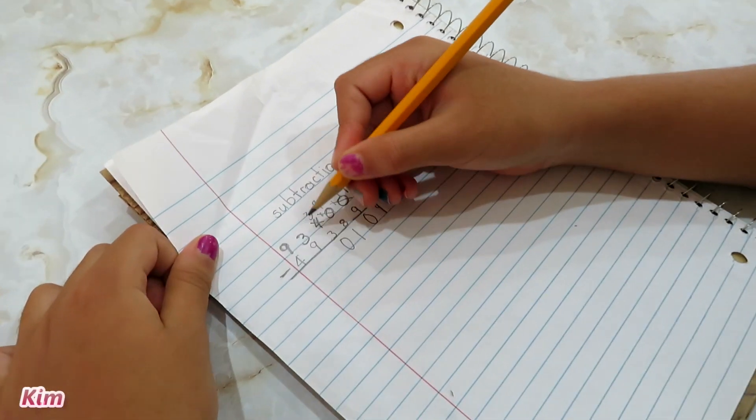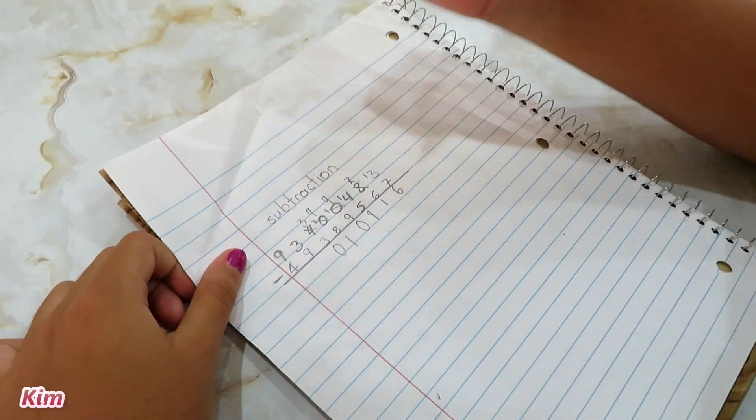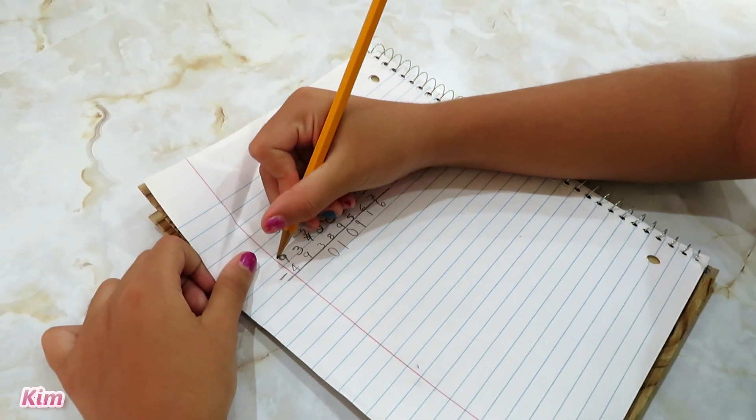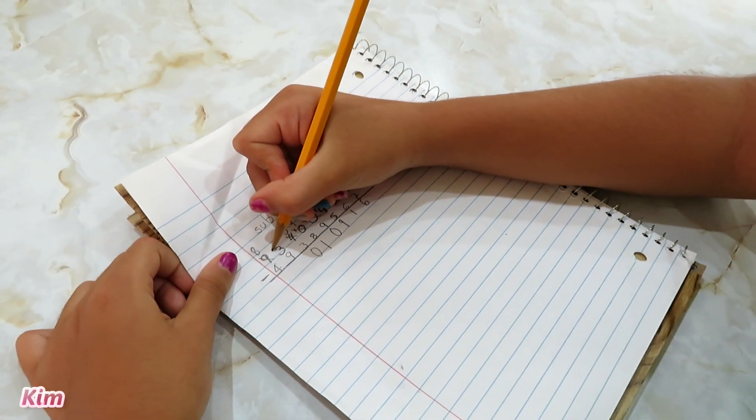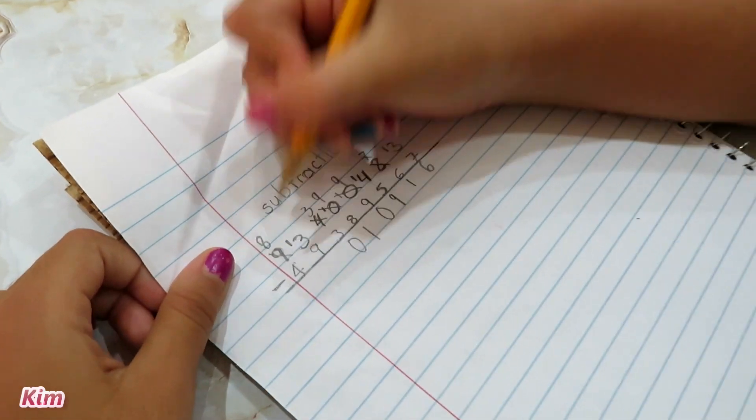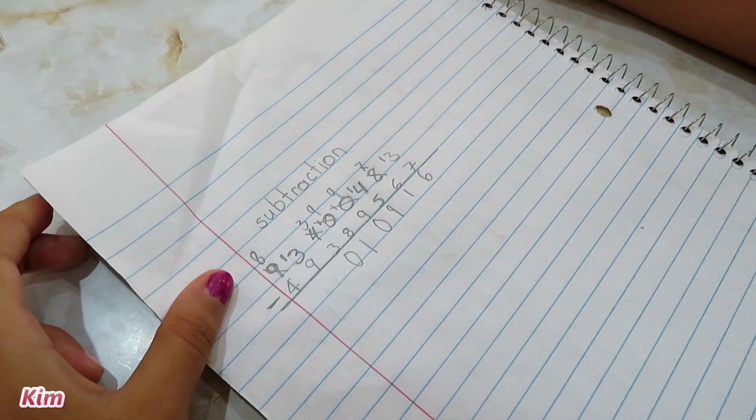3 minus 9. We can't take 9 away from 3, so we have to borrow. Again, cross this out and it becomes an 8. Now this one gets the 1 and becomes 13. 13 minus 9.